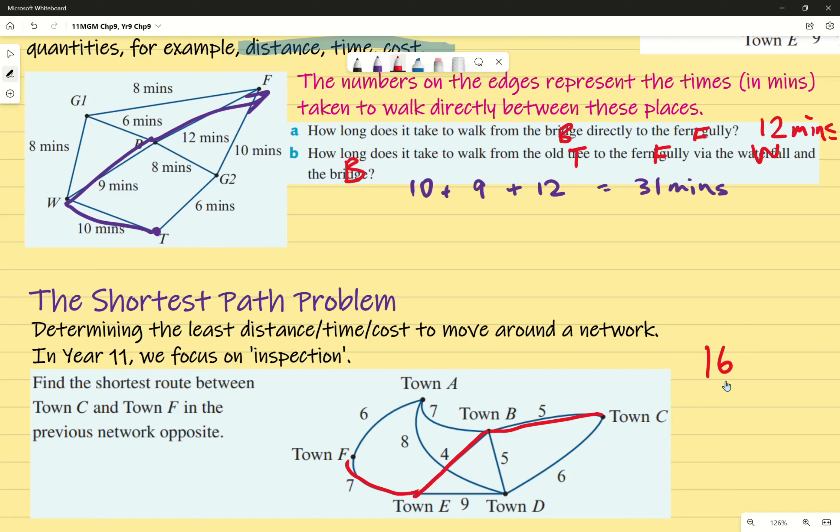I'm going to double check because this one here, going by 6, 4, and then 6 looks pretty good as well, doesn't it? So here, 6, 4, 6, that gives me 16. Okay. Is there an even shorter route by any chance?